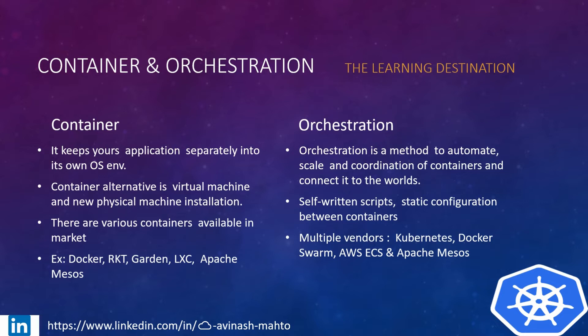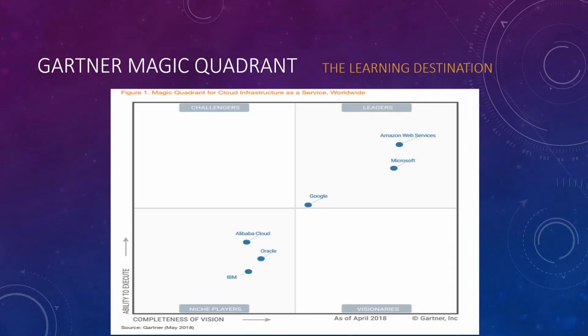We try to understand through the Gartner Magic Quadrant where the top public cloud providers stand. If I talk about the niche players, then IBM, Oracle, and Alibaba Cloud exist there. In late 2016, Google was also falling in that niche area, but nowadays it is in the leaders category. That is Microsoft, and still Amazon Web Services is dominating the cloud infrastructure industry.